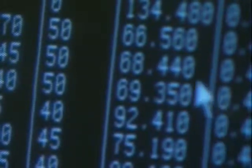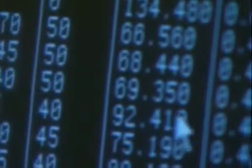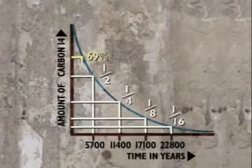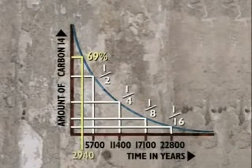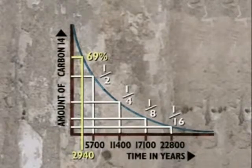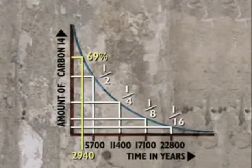Here it is on the screen. The mummy wrapping has 69% of its original carbon left — in other words, it's lost about 31% of the carbon it would have had in life. From this, the computer has worked out that its actual age in radiocarbon years is 2,940 years ago. That corresponds with the yellow line on the graph, which gives us the time of burial as 2,940 years ago.